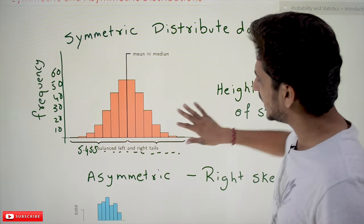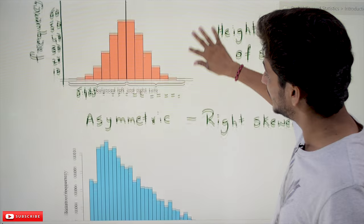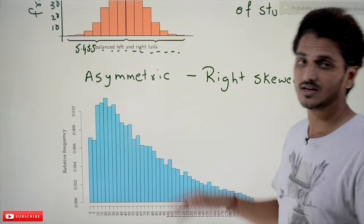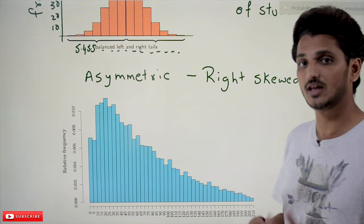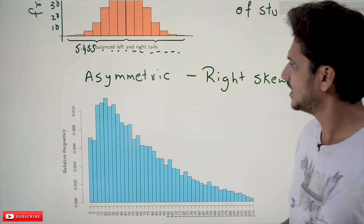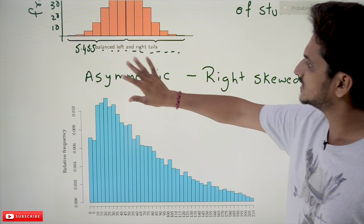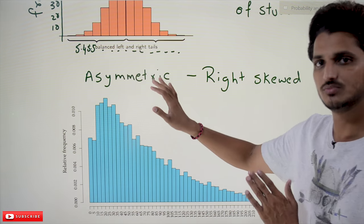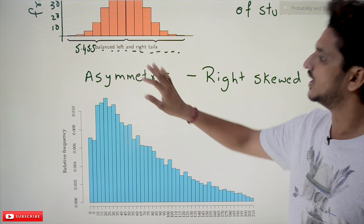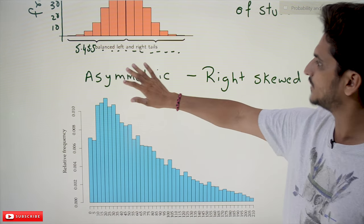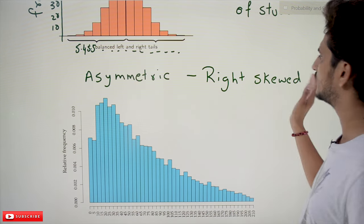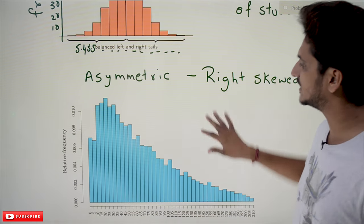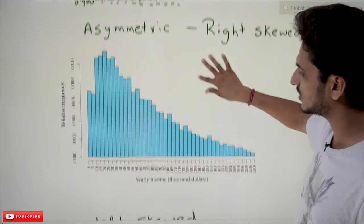If our data is asymmetrically distributed, there are two types — we call them skewed distributions: right skewed and left skewed. Let's try to understand each with an example.